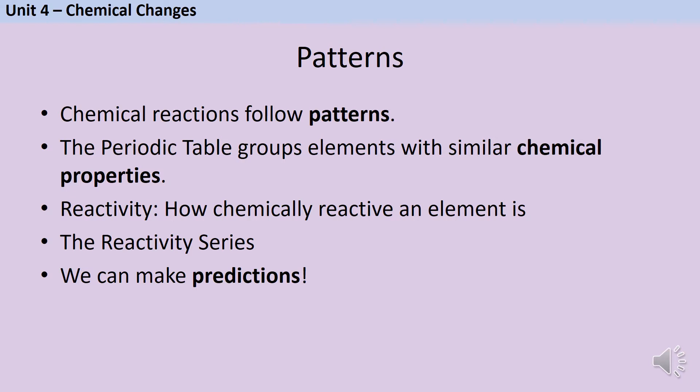When we talk about reactivity, we mean how chemically reactive an element is. How big will the reaction be? The reactivity series is a list of the metals in order of their reactivity. And we can construct a short version of this list ourselves by looking at certain reactions. And then based on this, we can make predictions about other reactions that might or might not happen.